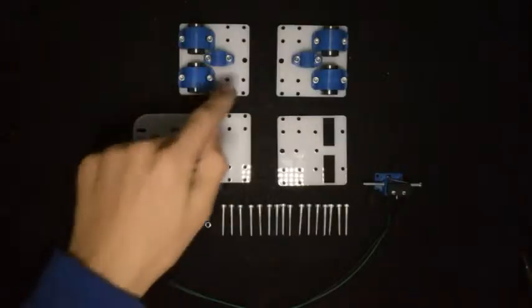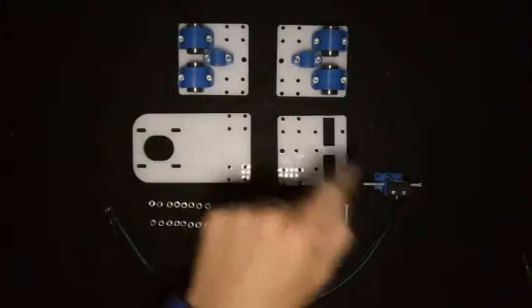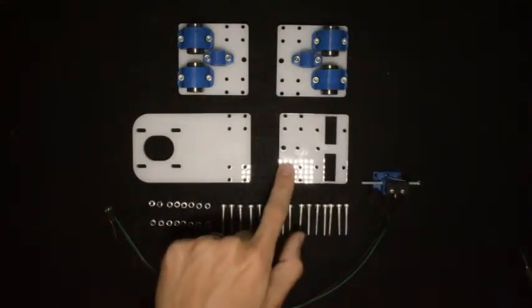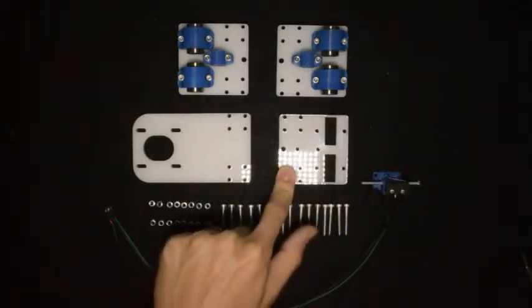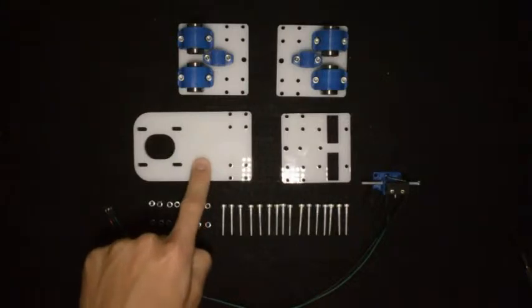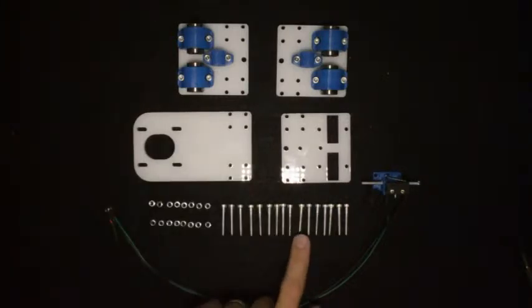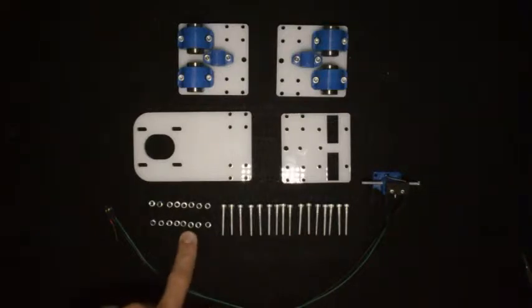For the next step, you will need the two assemblies that you did previously, together with this assembly. You will need the third component that looks like this, as well as this component. Then you will need 16 M3 by 25 screws and 16 M3 lock nuts.